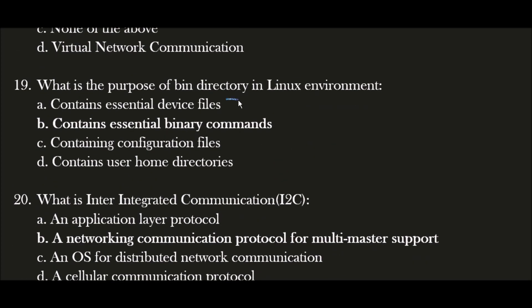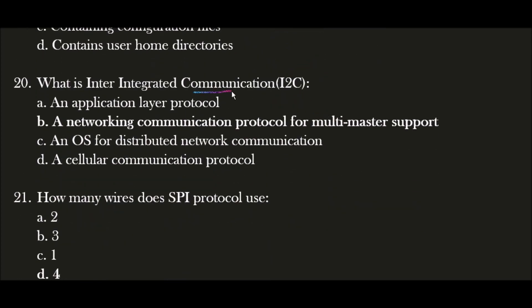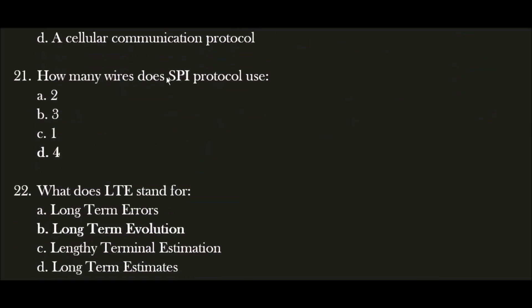Next question: What is the purpose of the bin directory in a Linux environment? The correct answer is option B — it contains essential binary commands. The main purpose of the bin directory in Linux is to contain essential binary commands. Next question: What is inter-integrated communication? It is I2C. The correct answer is option B — I2C is a network communication protocol for multi-master support. Next question: How many wires does the SPI protocol use? The correct answer is option D — four.